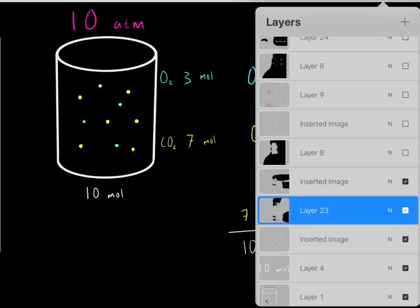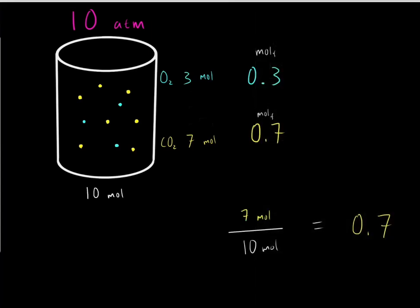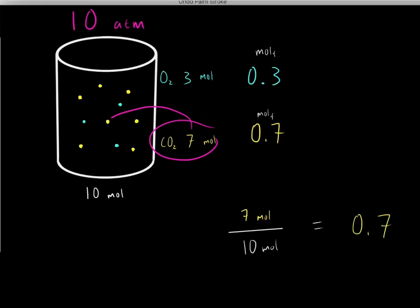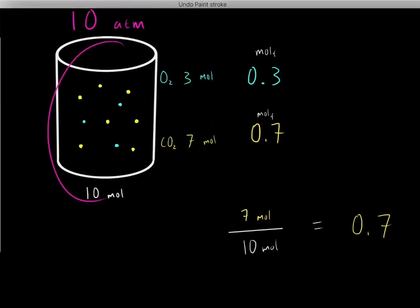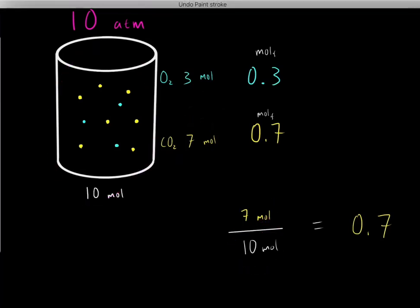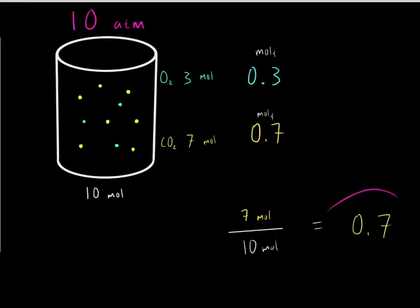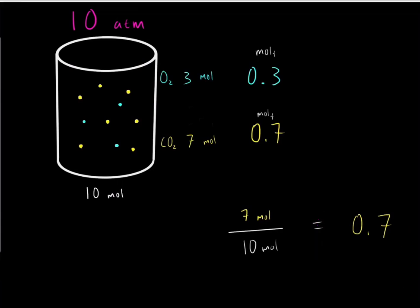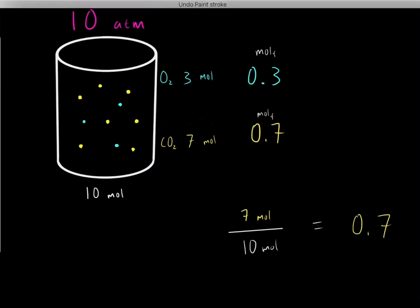What about the mole fraction for carbon dioxide? We have 7 moles of carbon dioxide and a total of 10 moles, so 7 divided by 10 is 0.7. So the mole fraction of carbon dioxide is 0.7.